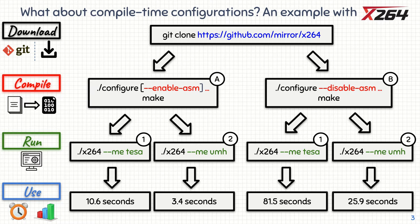Like with Blender, depending on the chosen runtime configuration, it will take more or less time to encode the same video. For the TESA motion estimator (runtime configuration 1), it leads to an encoding process of about 10 seconds, while for UMH (runtime configuration 2), it requires only 3 seconds. But more interesting, choosing compile time configuration B instead of A multiplies the encoding time by eight, whatever the runtime configuration is. So to predict X264 performances, ignoring compile time options seems really wrong. This example illustrates that there exist software systems for which the options chosen at compile time interact with the options chosen at runtime, changing the overall software performances.